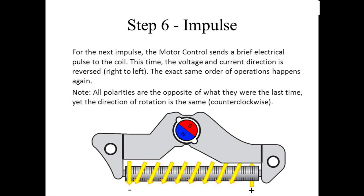Step 6: Impulse. For the next impulse, the motor control sends a brief electrical pulse to the coil. This time, the voltage and current direction is reversed, right to left. The exact same order of operations happens again. Note, all polarities are the opposite of what they were the last time, yet the direction of rotation is the same: counterclockwise.